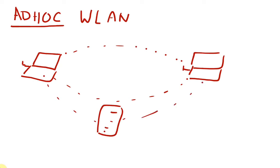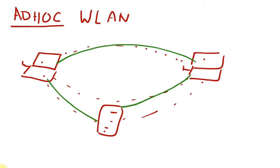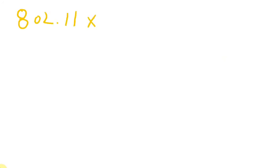An example of an ad hoc network is if you are in a meeting and would like to exchange data between two or more computers. You can easily establish an ad hoc network on an ad hoc basis and then disassemble it. That is all for ad hoc networks. Now we will continue with IEEE 802.11x based local area networks.